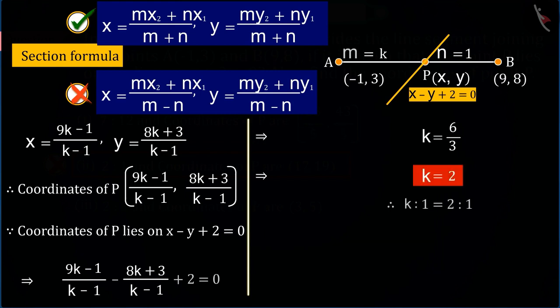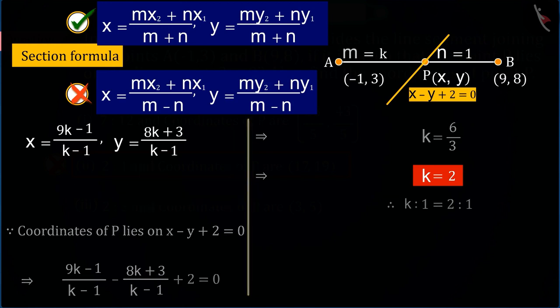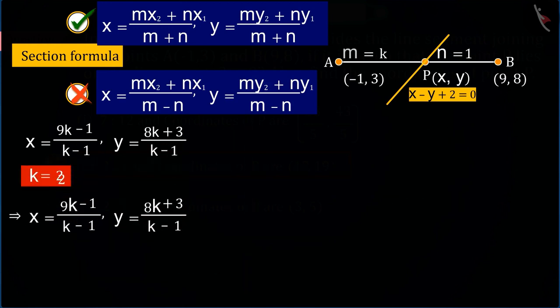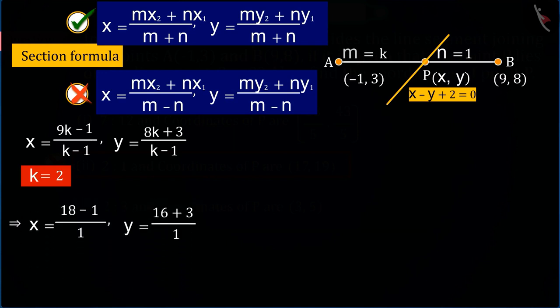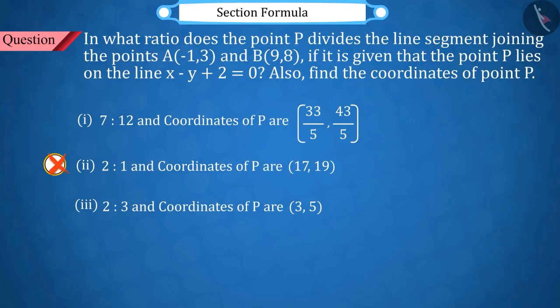That gives value of k as 2, and on this basis, we also find the coordinates of point P, and your answer goes wrong.